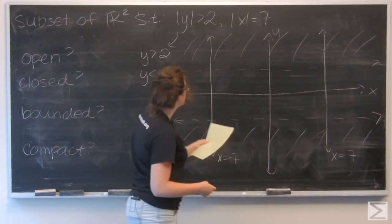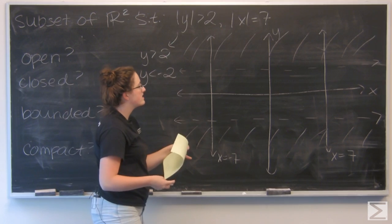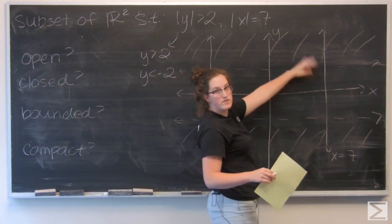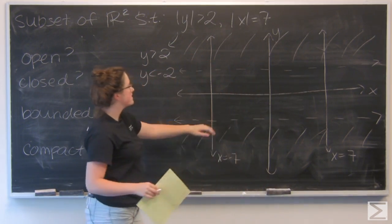So the intersection of these two kind of regions I've got is the top half of the two of these lines and then the bottom half.